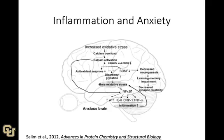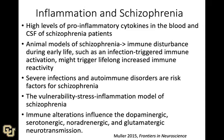Regarding schizophrenia, there's work suggesting high levels of pro-inflammatory cytokines can be found in the blood and cerebrospinal fluid of schizophrenia patients. Animal models suggest immune system disturbances, especially earlier in life — such as infection-triggered immune activation — might trigger lifelong increased immune system reactivity. Severe infections and autoimmune disorders are risk factors for schizophrenia. The vulnerability-stress-inflammation model attempts to explain these connections, and immune alterations are known to influence dopaminergic, serotonergic, noradrenergic, and glutamatergic neurotransmission.